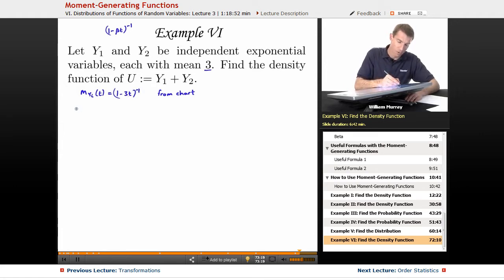And so we're going to use that when we find the moment generating function for u. That's the moment generating function for y1 plus y2. And the whole point of moment generating functions, or one of the very useful properties that they have, is that it converts addition into multiplication. So m sub y1 times m sub y2, that's 1 minus 3t to the negative 1, times 1 minus 3t to the negative 1. And so we just get 1 minus 3t to the negative 2.